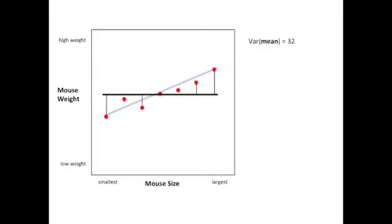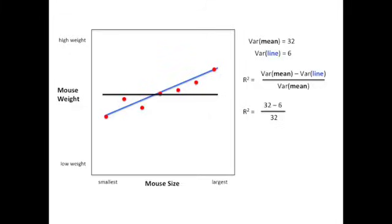Now, we'll walk through an example where we calculate things one step at a time. First, we'll start with the variation around the mean. In this case, that equals 32. The variation around the blue line is only 6, which is what we suspected since it appears to fit the data much better. Once we've calculated the variation around the mean and the variation around our blue line, we can plug these values into our formula for R squared. After plugging in our values, we get R squared equals 32 minus 6 over 32. After subtracting 6 from 32, we get 26.